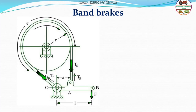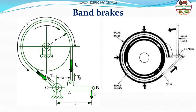Coming to band brakes: there are bands that engage with the drum through a lever arm of length L, where force F is applied at the outer end. The two sides of the band — the tight side tension T1 and slack side tension T2 — wrap around the drum like a band. Brake lining material is attached to the band, which engages with the rotating drum. The brake lever applies the load to slow the drum down.